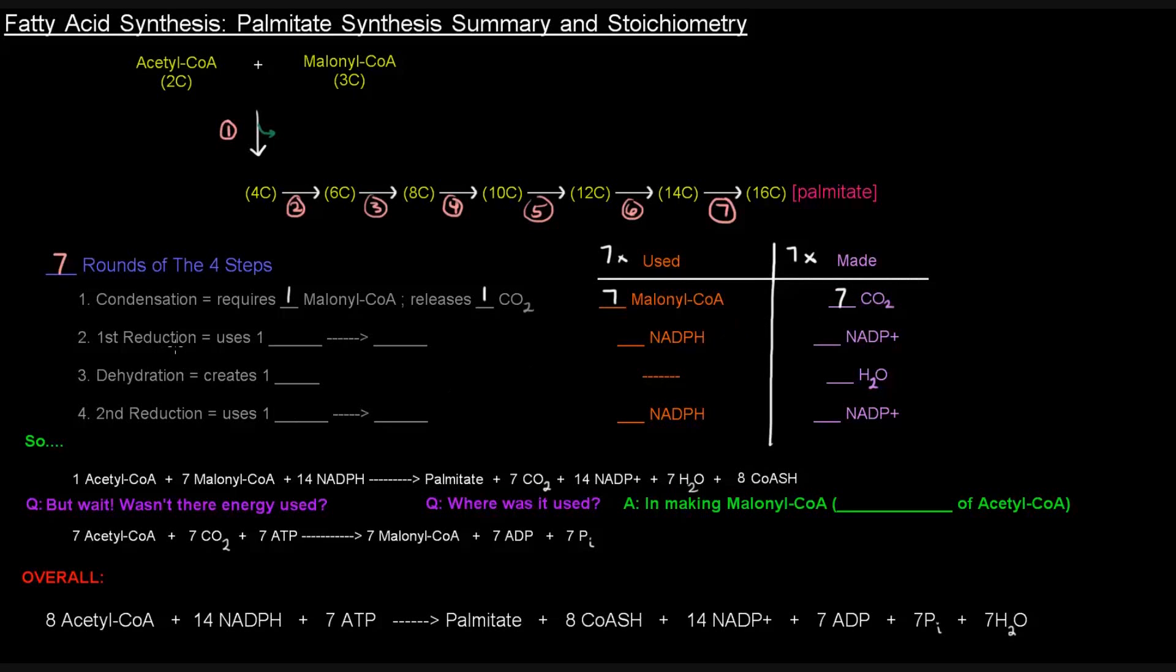Now, the first reduction used one NADPH, and that would be turned into NADP+, and that happened seven times. So we'd have seven NADPHs used in that first reduction and seven NADP-pluses resulting from that.